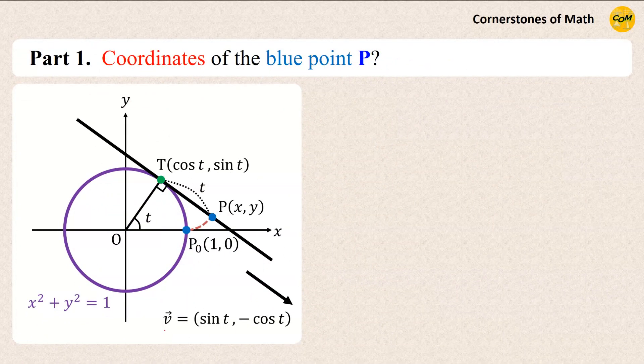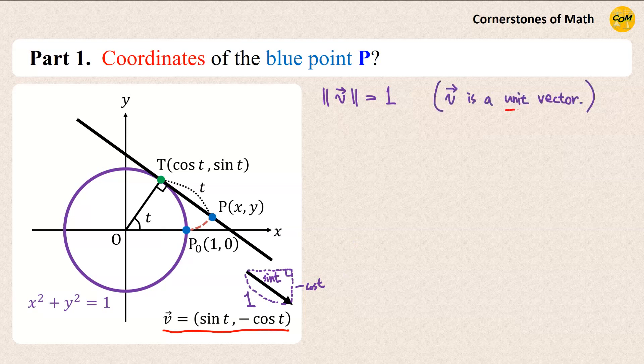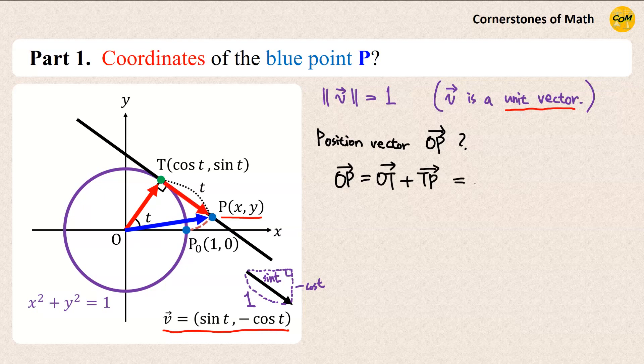Another neat thing about this direction vector V is that its norm or magnitude is 1. In other words, vector V is a unit vector. Now, we want to find the coordinates of point P, or this position vector OP. And this vector OP can be obtained by this vector OT plus this vector TP. Here, vector OT is given as cosine T, comma sine T. And vector TP is in the same direction as direction vector V. But the direction vector V has length 1 since it is the unit vector, whereas vector TP has length of T. Therefore, vector TP is T times the unit vector V.